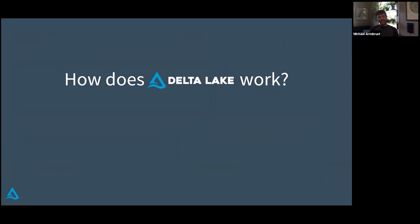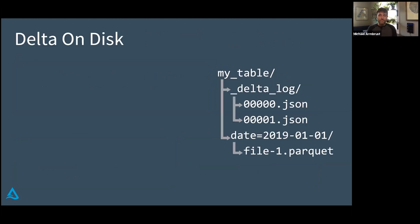You might be saying, this seems too good to be true. How can you possibly get ACID transactions on top of these cloud storage systems? I know they're scalable, but they have eventual consistency. Delta on disk is still stored in the file system along with a bunch of Parquet files. There are two different sets of files: the transaction log, which has a bunch of JSON files, and checkpoints. Each of those JSON files represents a version of the table as it moves through time.